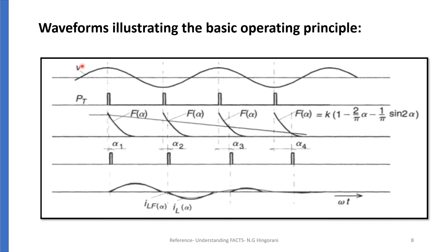In the waveforms, the first waveform shows the AC voltage. The peak of the voltage is found by the PLL block. This PLL block gives us the instant at which the voltage is at its peak — for the positive half cycle this is the instant the voltage reaches its peak value, and similarly for the negative half cycle. So every half cycle, the PLL block gives us the instant at which the peak of the voltage is achieved.